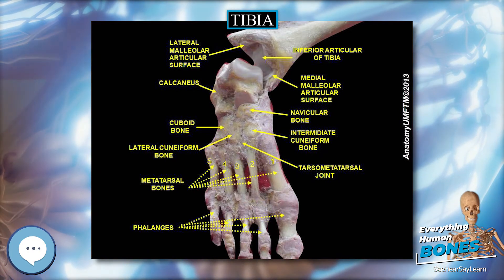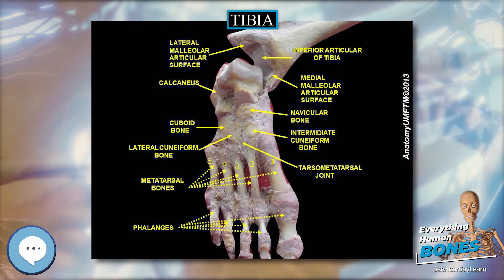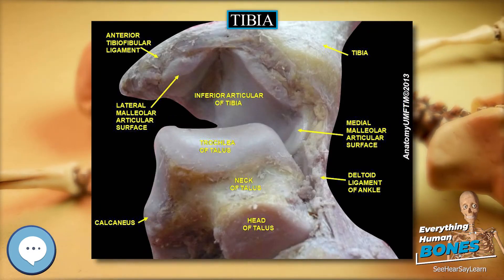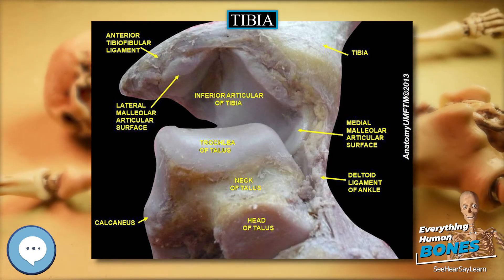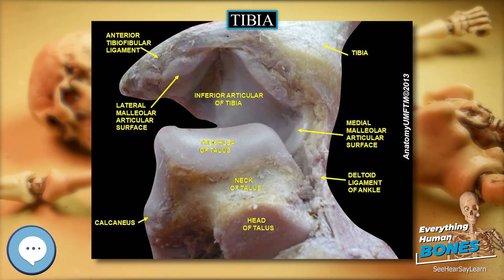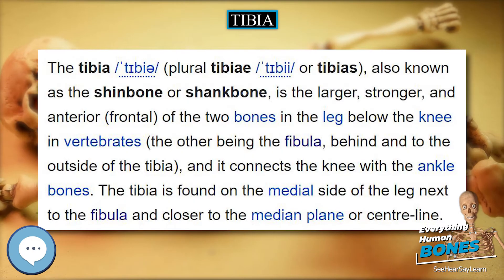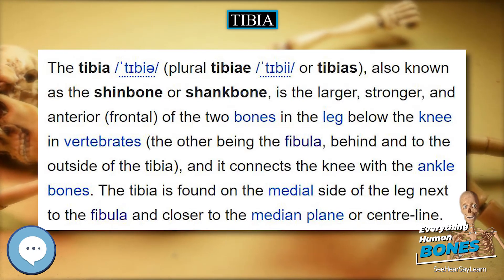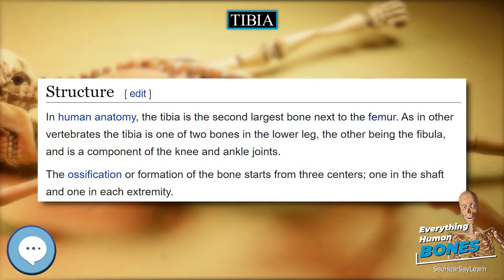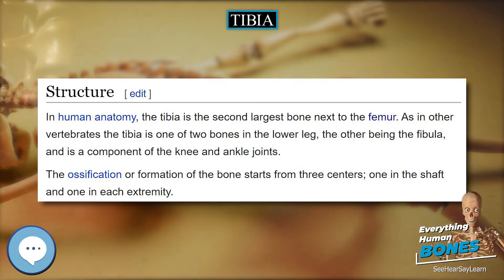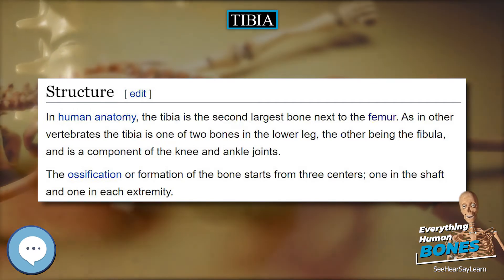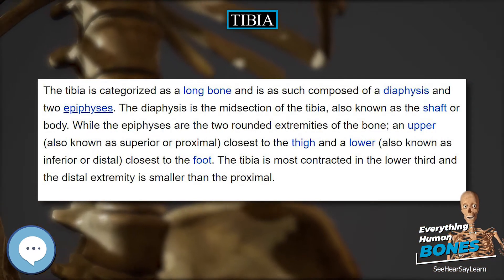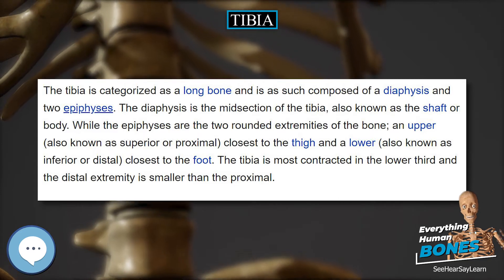The lateral surface is narrower than the medial. Its upper two-thirds present a shallow groove for the origin of the tibialis anterior. Its lower third is smooth, convex, curves gradually forward to the anterior aspect of the bone, and is covered by the tendons of the tibialis anterior, extensor hallucis longus, and extensor digitorum longus, arranged in this order from the medial side.